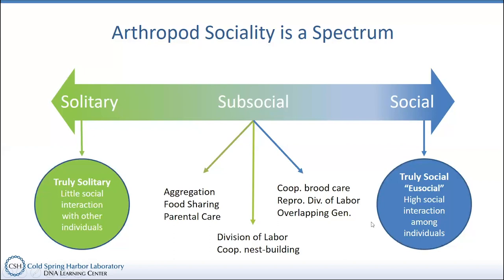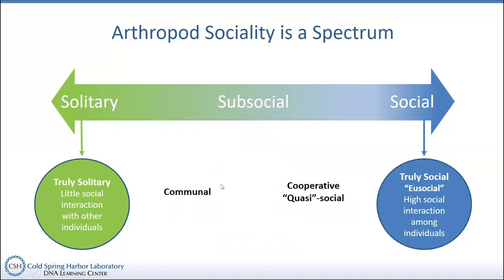Lastly, we have the overlapping of generations — multiple different generations coexisting in the same colony. These traits are more characteristic of truly social behavior, whereas aggregation and simpler behaviors are more characteristic of subsocial and solitary behavior.